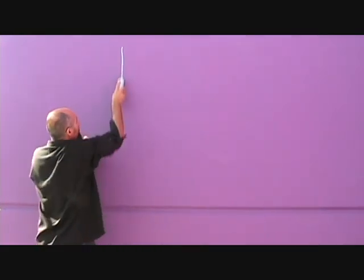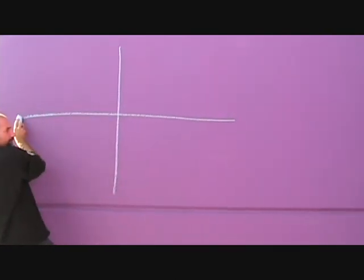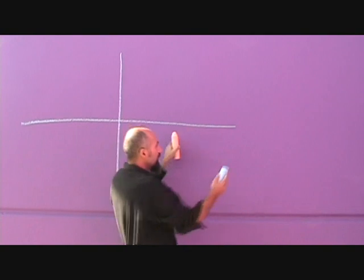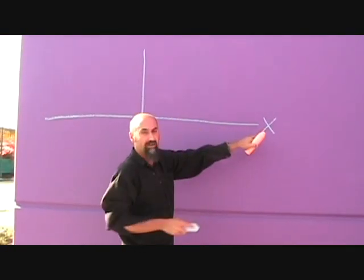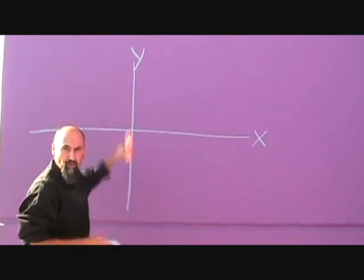So basically, what you have is a coordinate system where the horizontal axis is called the X axis, usually, and the vertical axis is called the Y axis.